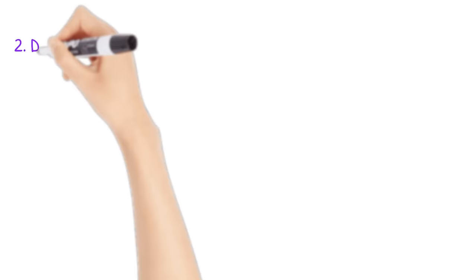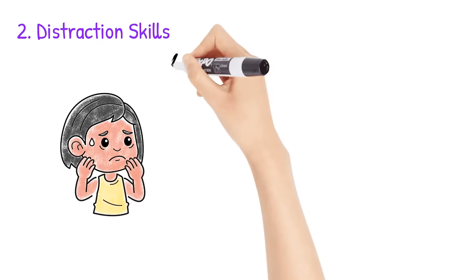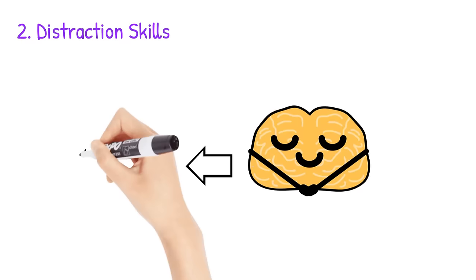Number two, distraction skills. These are things you can do to get your mind off of your anxiety. The key to distraction skills is to not just escape the anxious situation, but instead take some time to get your mind off of your anxiety and then return, feeling calm and under control.